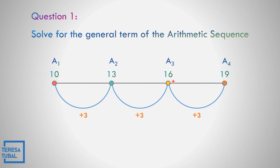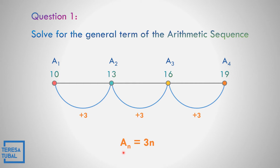We may subtract the third term minus the second term: 16 minus 13, that is also equal to 3. Or 13 minus 10, that is also equal to 3. So the equation — this is arithmetic, so that is linear. So a sub n equals the common difference times n.